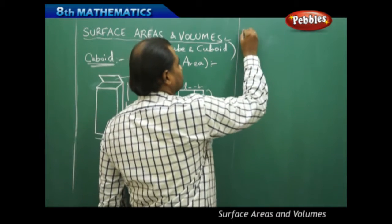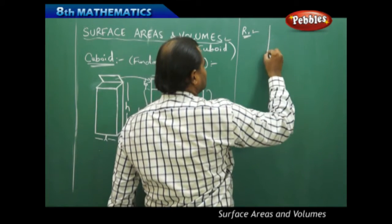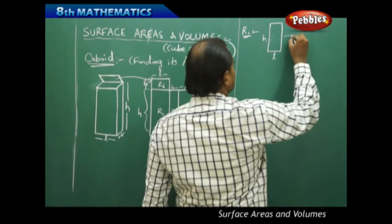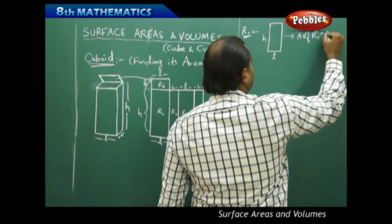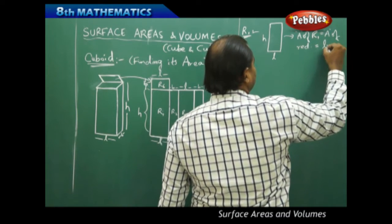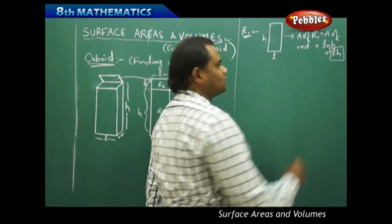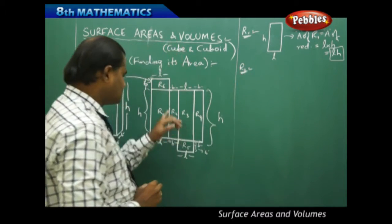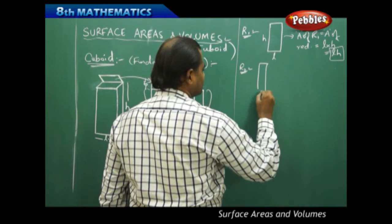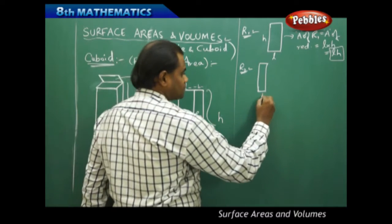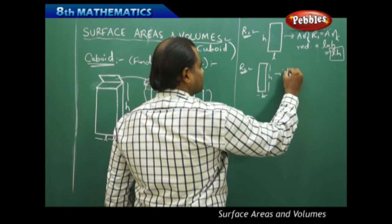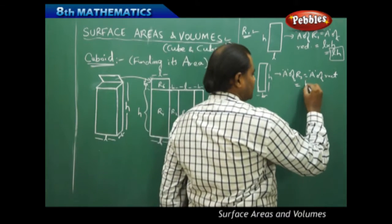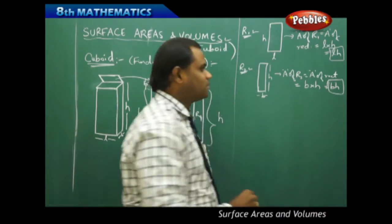Region R1 is a rectangular strip with dimensions L and H, so the area of R1 equals length times height, which is LH. Region R2 is a thinner strip with width B and height H, so the area of R2 equals B times H, which is BH.